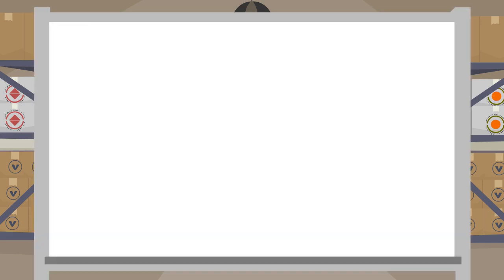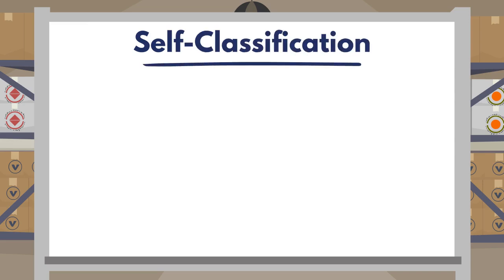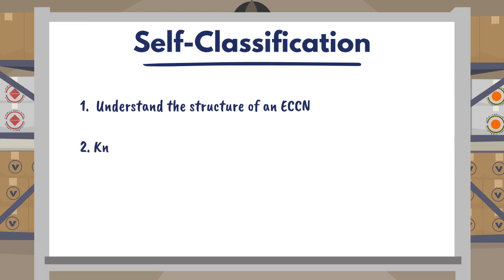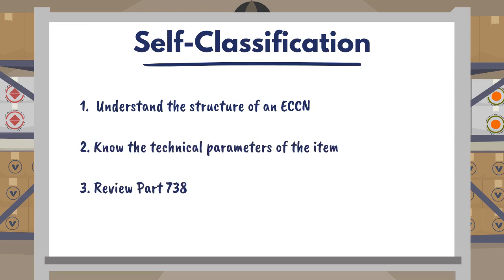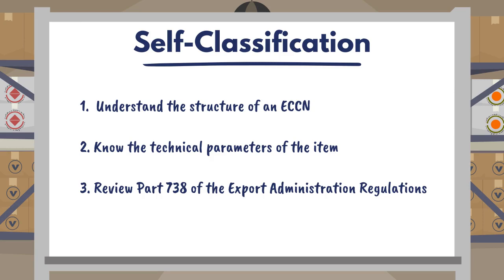Before starting the self-classification process, one needs to understand the structure of an ECCN and the technical parameters of the item, as most ECCNs are based on technical descriptions. It also helps to review the instructions in Part 738 of the EAR to learn how to use the Commerce Control List and read ECCN entries.